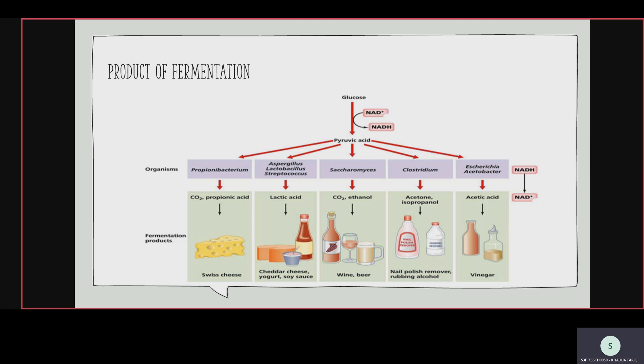Third, Saccharomyces — a yeast — converts pyruvic acid into carbon dioxide and ethanol. Fourth, Clostridium converts it into acetone and isopropanol. Fifth, pyruvic acid using Acetobacter converts into acetic acid. The fermentation types are: propionic acid fermentation, lactic acid fermentation, ethanolic fermentation, acetone fermentation, and acetic acid fermentation.